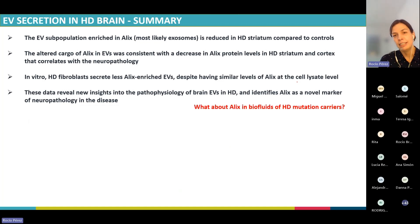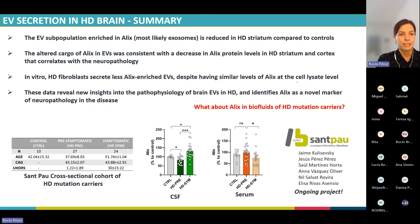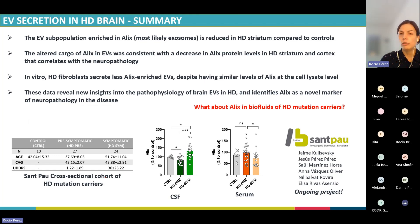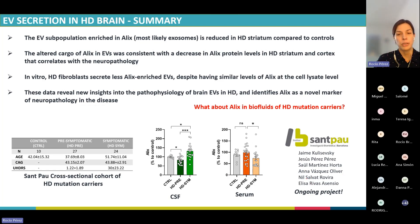Following these results, we wondered what happens with ALIX in biofluids from Huntington's disease mutation carriers. This is an ongoing project taking place in San Pau, where they are analyzing ALIX levels in a cross-sectional cohort, with studies moving toward a longitudinal design. The plan is first to look at soluble ALIX levels and then specifically at ALIX in EVs. This is led by Anna Batket, Nils Albaet, and Elisa Rincas, who are working in San Pau.